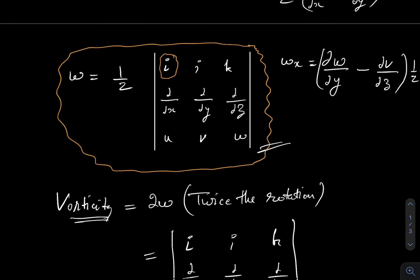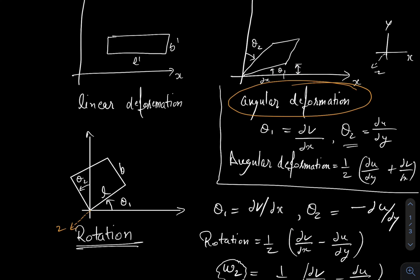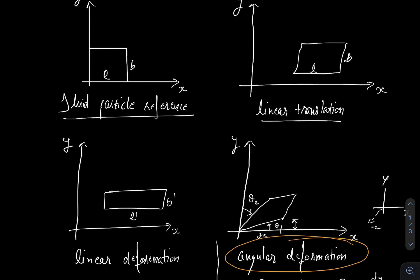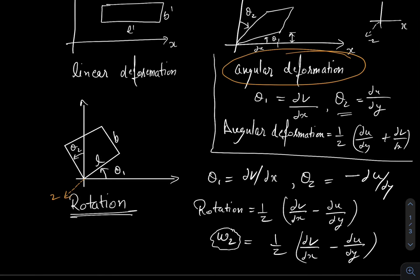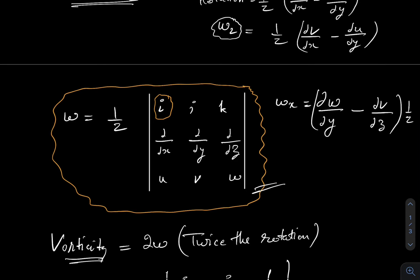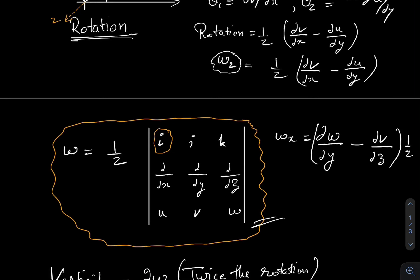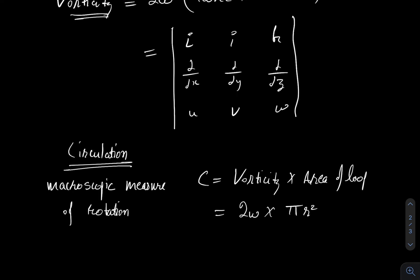So this was all about rotation. In this class we studied that a fluid element has several possibilities: it can linearly translate, it can linearly deform, it can angularly deform, and it can rotate. We found how to calculate the rotation component along each axis for a fluid particle, and then we studied vorticity and circulation. I hope all concepts are clear and we will meet in the next class.